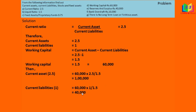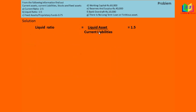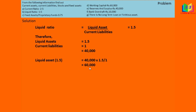Using current assets and current liability, we have to find out the value of stock. The liquid ratio is 1.5, meaning liquid assets divided by current liability equals 1.5 — so liquid asset is 1.5 and current liability is 1. The value of 1 is 40,000, so the value of 1.5 (liquid assets) is 60,000. The formula for stock is current assets minus liquid assets: 1 lakh minus 60,000 gives stock of 40,000.